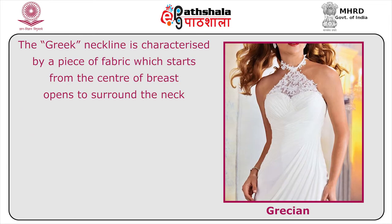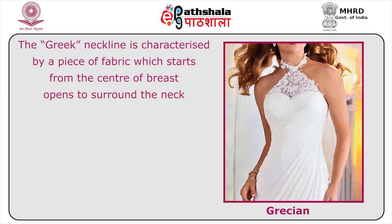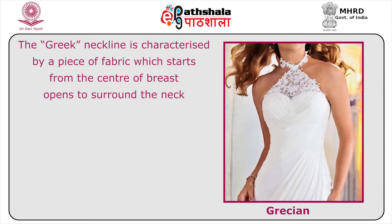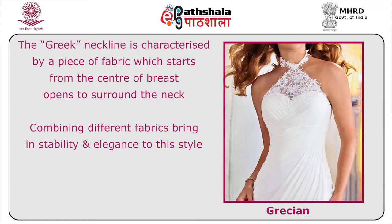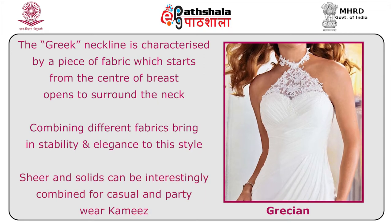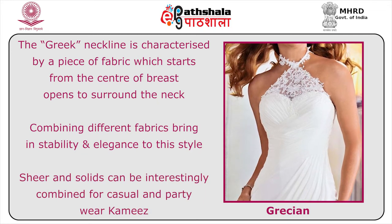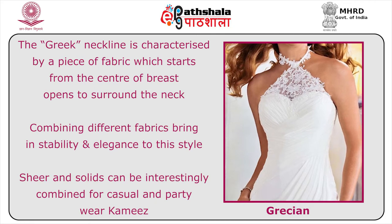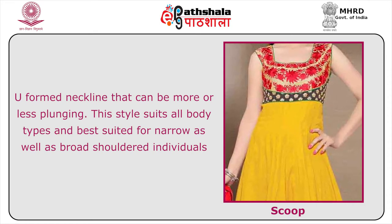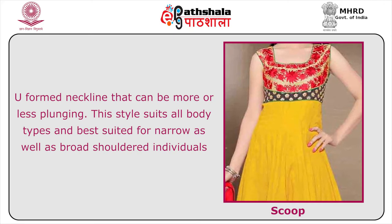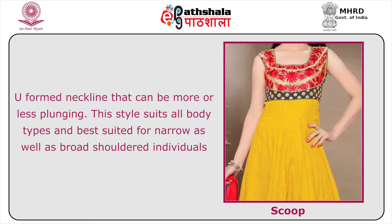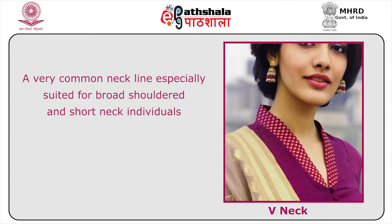The Grecian neckline is characterized by a piece of fabric starting from the center of the breast and opening to surround the neck; combining different fabrics brings stability and elegance to this style. The scoop is a U-form neckline that can be more or less plunging, suitable for all body types and especially for narrow- and broad-shouldered individuals. The V-neck is a very common neckline suited for broad-shouldered and short-neck individuals; it forms a triangle and can be neatly finished with contrast facing.